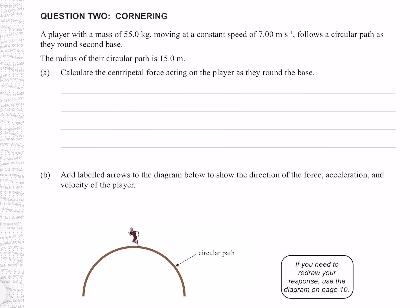Question 2. A player with a mass of 55 kilograms, moving at a constant speed of 7 meters per second, follows a circular path as they round second base. The radius of their circular path is 15 meters. Calculate the centripetal force acting on the player. Using F equals mv squared over r with all known values gives 180 newtons to three significant figures.